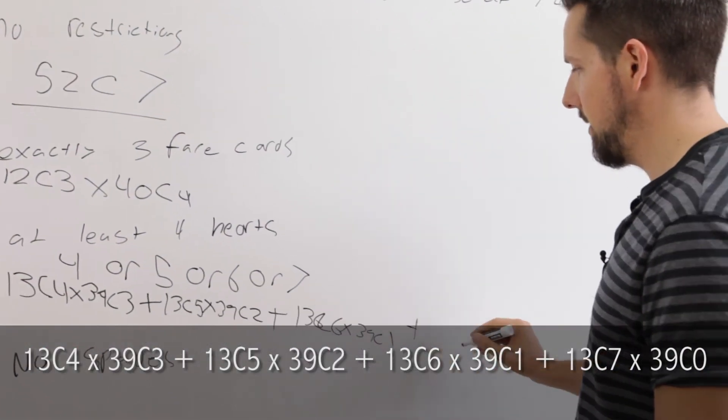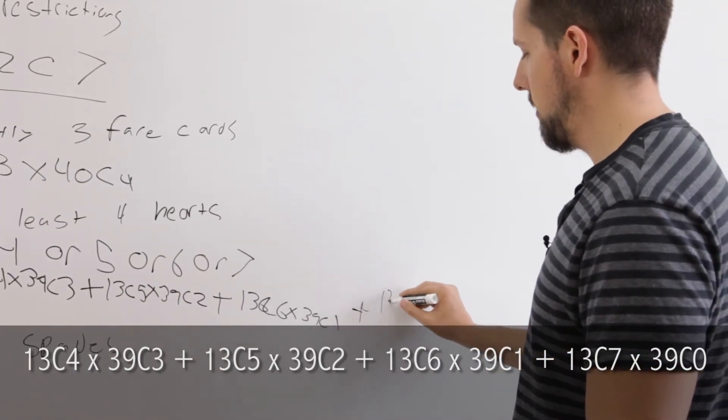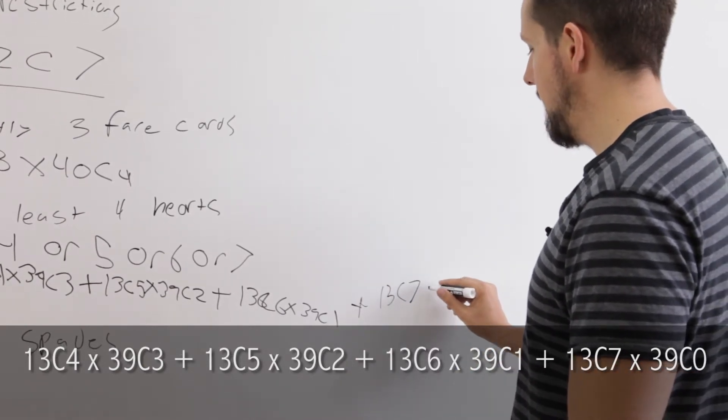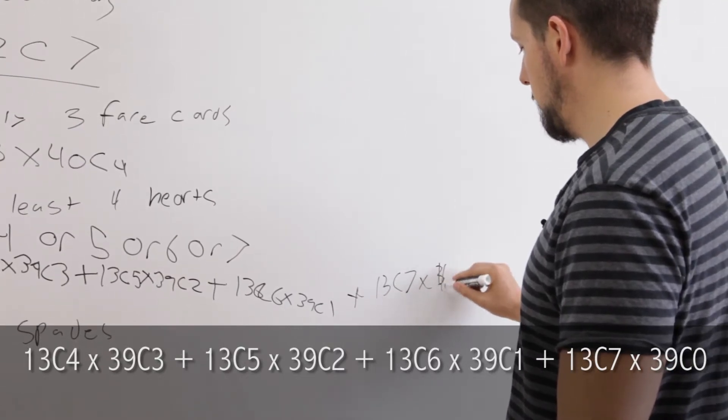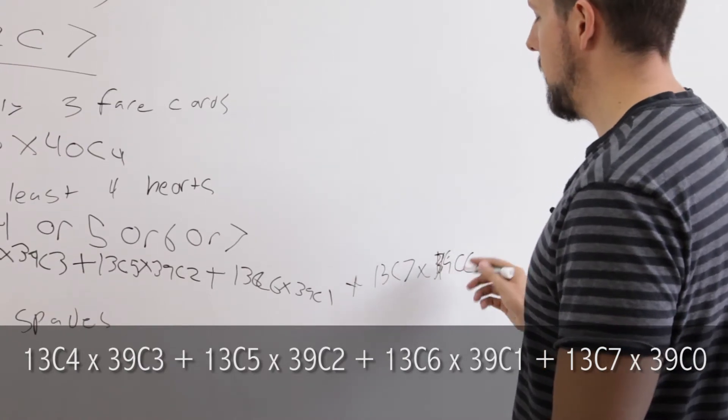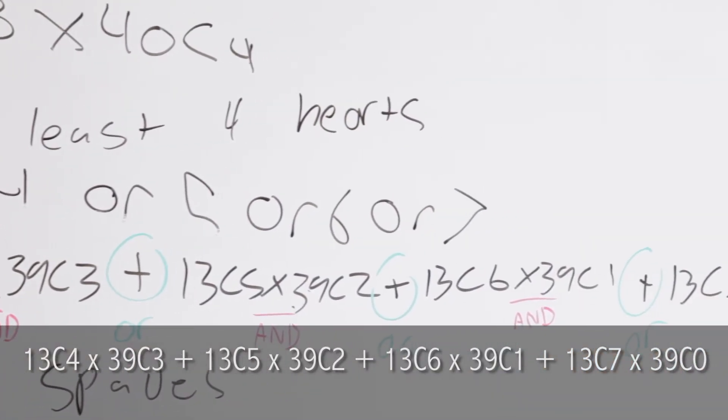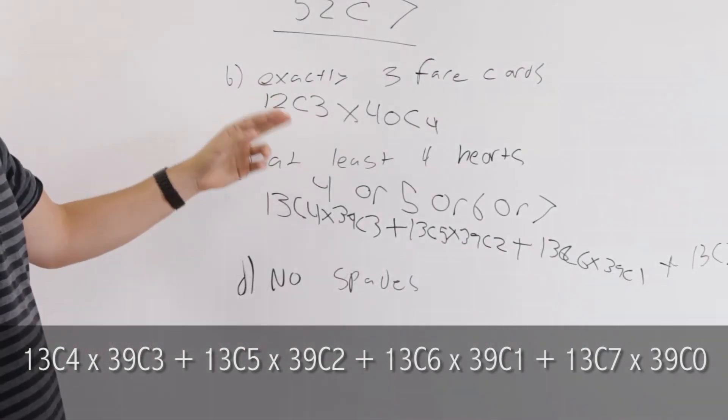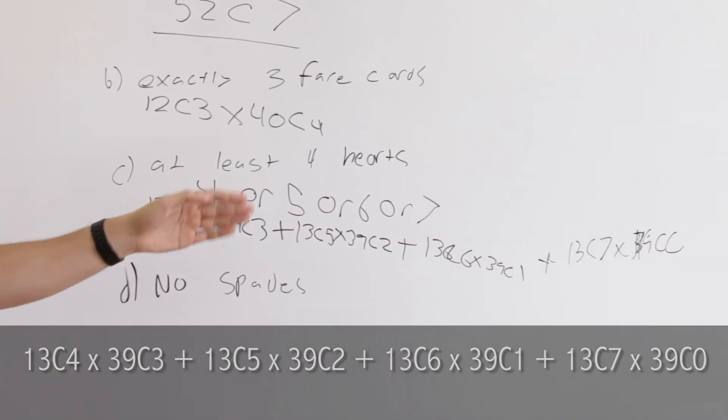Picking seven means we're just choosing all seven cards as hearts. So it would be 13 choose seven. Now if we want we could write and picking zero from the rest. So 40 or 39 choose zero. But that's going to work out to one anyway. So we don't need to write it. So when you're doing a question that says at least or it's complicated like this, make sure you do the one intermediate step where you write this or that or that or that. It'll help guide your thinking and make these go easier.